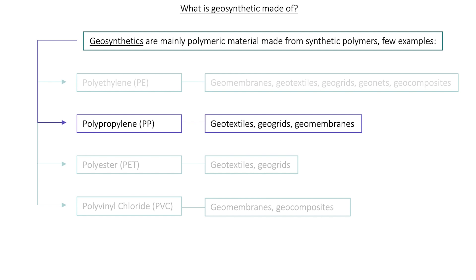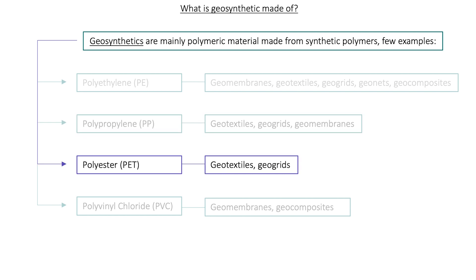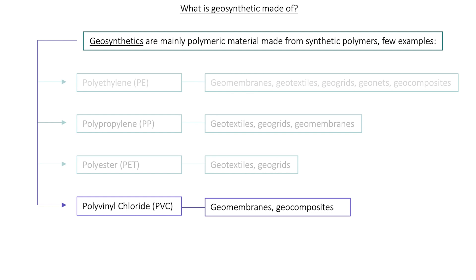Polypropylene (PP) is widely used to make geotextiles, geogrids, and geomembranes. Polyester (PET) is used to make geotextiles and geogrids. And polyvinyl chloride (PVC) is used to make geomembranes and geocomposites.